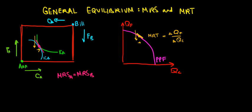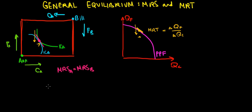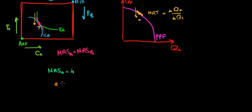Now let's give an example to understand where we're going. What do we want in equilibrium? Suppose the MRS of N is equal to 4 — in other words, N is willing to exchange 4 units of food for one more unit of clothing. So 4 units of food would be equivalent to one more unit of clothing. And let's suppose that the marginal rate of transformation at that specific point is equal to 2.